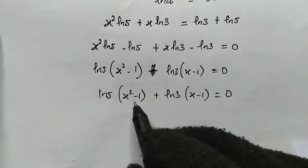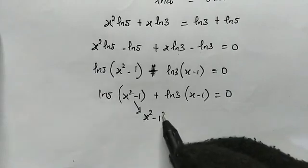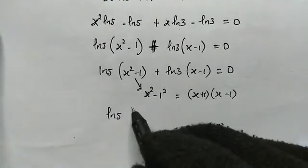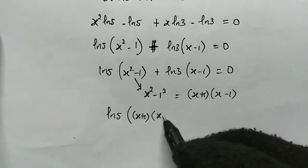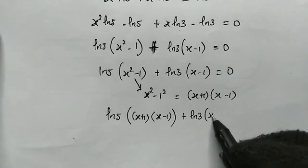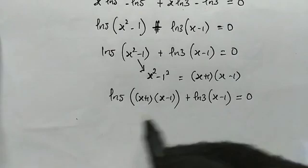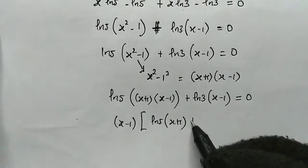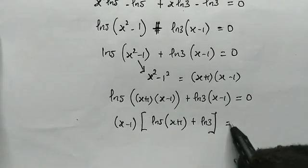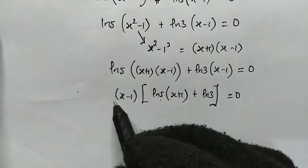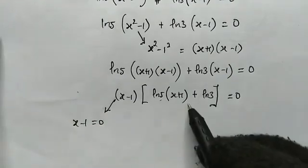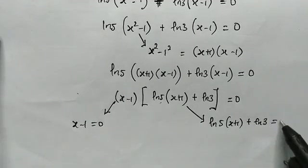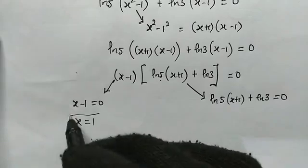Now, x squared minus 1 is a difference of two squares, which factors as (x + 1)(x − 1). So we have natural log of 5 times (x + 1)(x − 1) plus natural log of 3 times (x − 1) equals 0. From the left-hand side, (x − 1) is common, so we factor it out: (x − 1) times [natural log of 5 times (x + 1) plus natural log of 3] equals 0. Either (x − 1) = 0, giving x = 1, or the bracket equals 0.